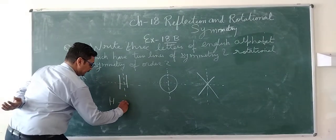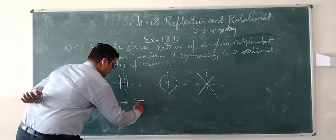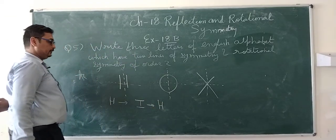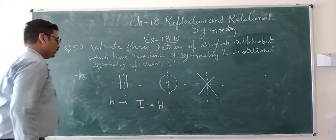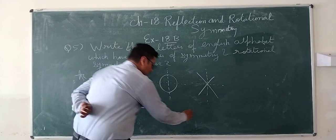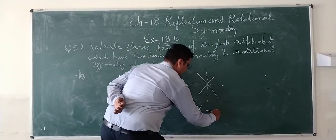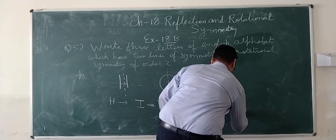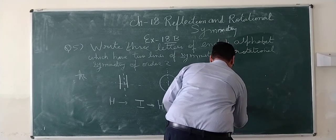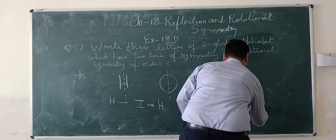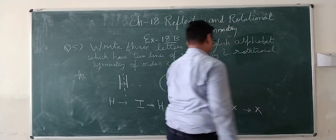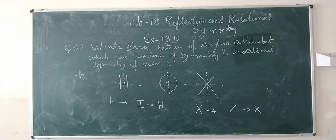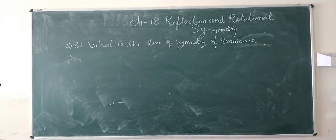For H, we can say it can be written as this and then again this way when we rotate it. For X we can rotate it, and again it can be written this way. What is the line of symmetry of semicircle?